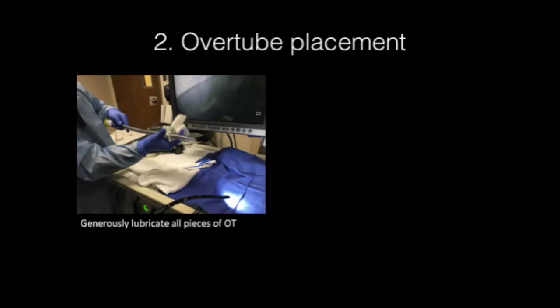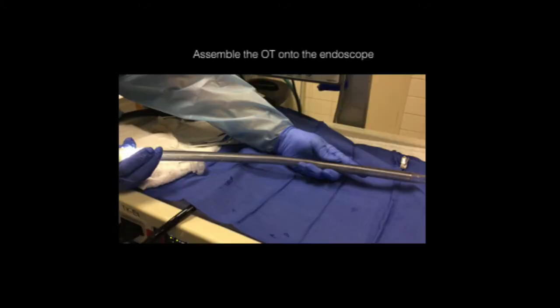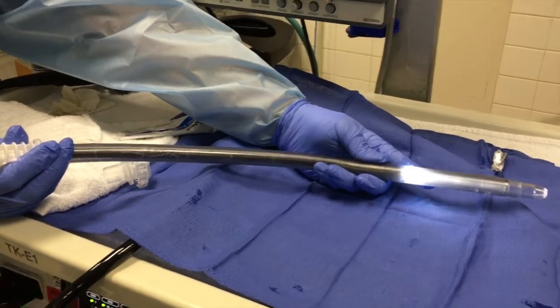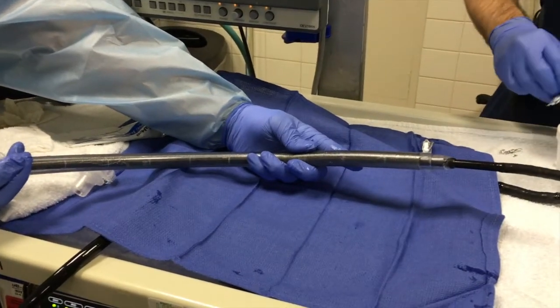For the correct use of the overtube, we should follow several steps. A: Generously lubricate all pieces of the overtube with gel and water — if you use only water, this might not be enough. B: Load and lock the inner tube inside the outer tube. C: Assemble the overtube onto the endoscope, ensuring that the tip of the endoscope advances beyond the tip of the overtube.